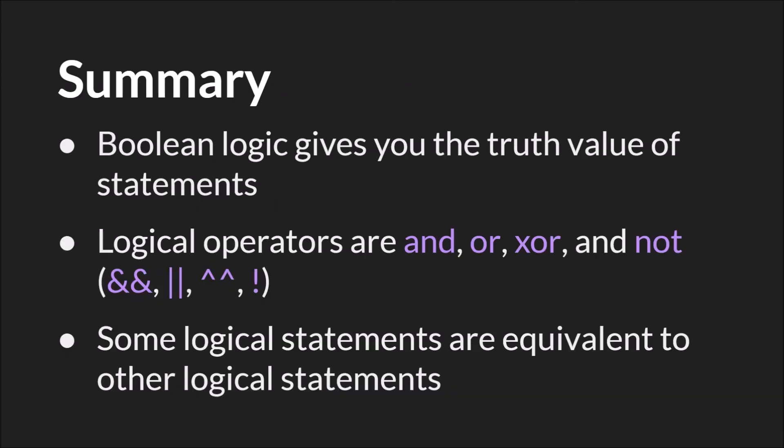In summary, Boolean logic gives you the truth value of a statement as a whole, even if that statement is made up of many substatements. The logical operators in GameMaker Studio 2 are AND, OR, XOR, and NOT, which have symbolic equivalents. And some logical statements are equivalent to other logical statements. It's great to know those equivalencies, and that way you can switch between them and use the ones that make the most sense for the given situation, which will make your code easier to read and maintain in the long run.